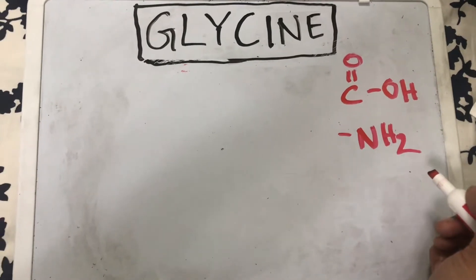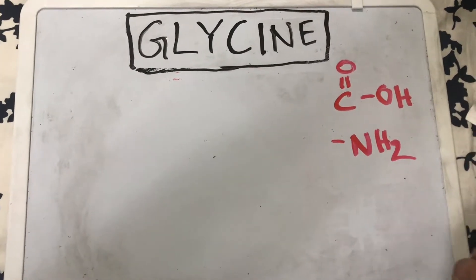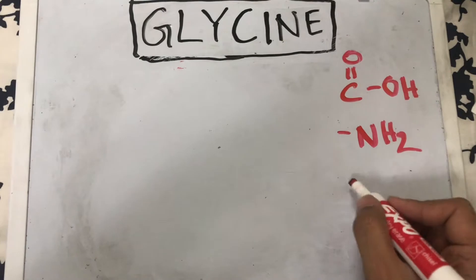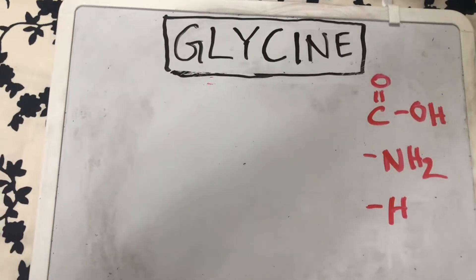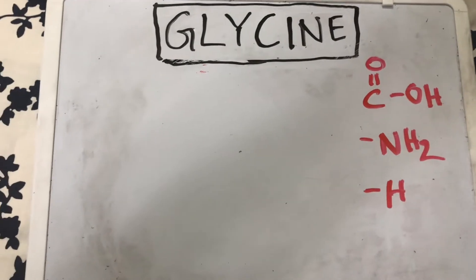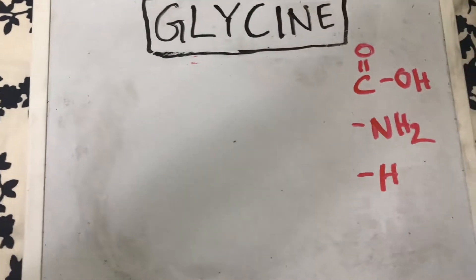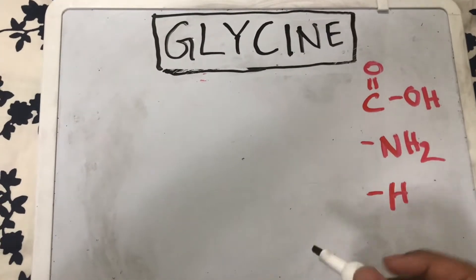Like I mentioned, glycine is the simplest amino acid. It has the side chain hydrogen, bonded to a single hydrogen atom. Drawing the structure is actually very simple. You draw your central carbon.